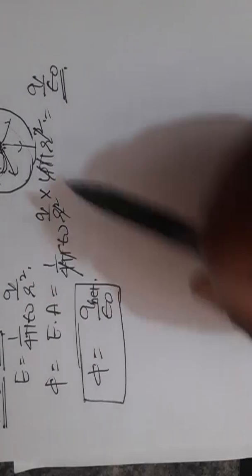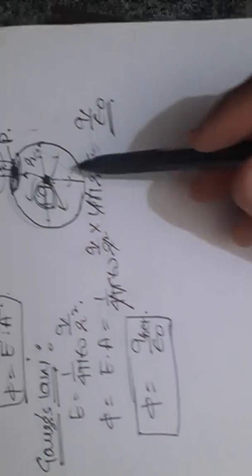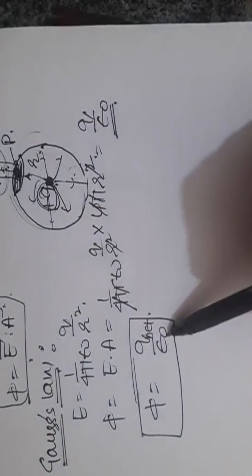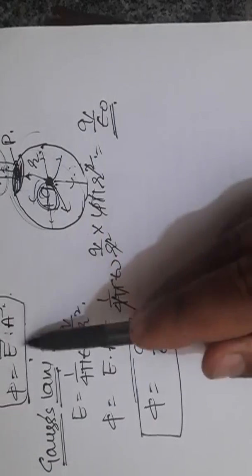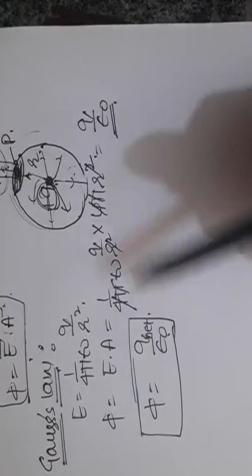Whatever charge is inside the closed surface, inside the closed surface divided by epsilon_0. You don't need to calculate E dot A. Simply put it and you get the answer.